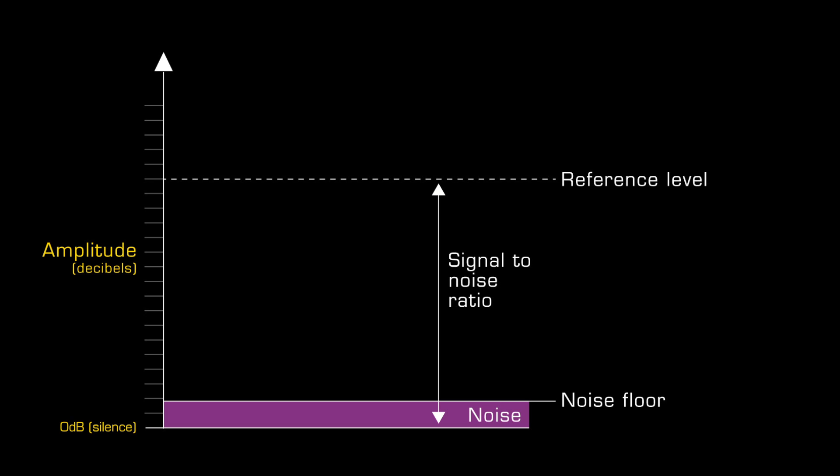Above the noise floor there may be a horizontal line that shows a reference level for measuring the relationship between the unwanted noise and wanted signal, the so-called signal to noise ratio.